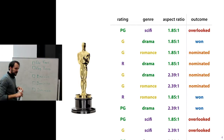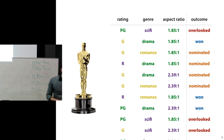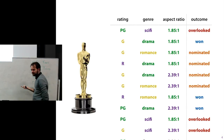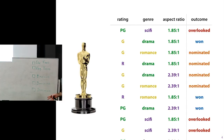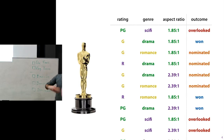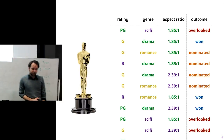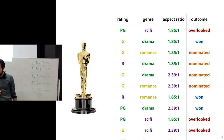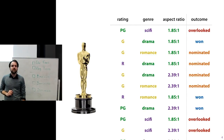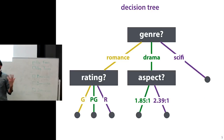For decision trees and regression trees, we'll use a running example predicting whether movies will win an Oscar — three classification categories: won, nominated, or overlooked. We start with categorical features, since that's where decision trees fit most naturally. The features are: rating (PG, G, or R), genre (science fiction, drama, or romance), and aspect ratio, which is essentially two possible values. Based on these three categorical features, we predict whether a movie wins an Oscar.